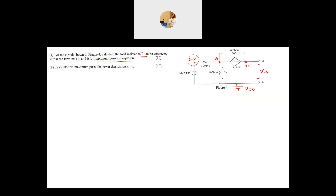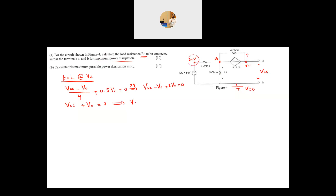We have one, two, three nodes total. The node with the voltage source is known, so we only need to apply KCL at two nodes. Applying KCL at V_open_circuit — there are two branches — assuming the current flows from V_oc toward V₀ through the 4Ω resistor: (V_oc − V₀) / 4 + 0.5V₀ = 0. Multiplying through by 4: V_oc − V₀ + 2V₀ = 0, so V_oc = −V₀. This is the first equation.